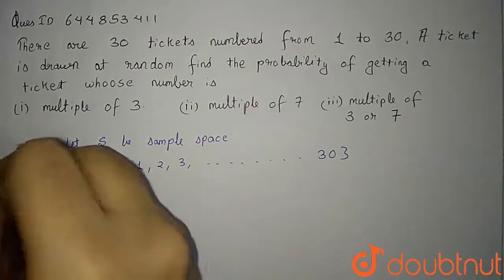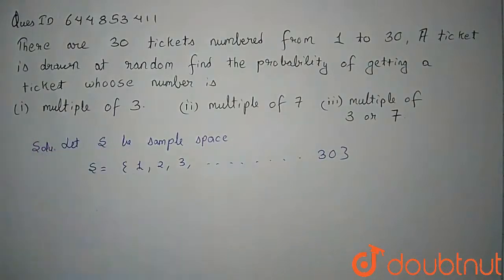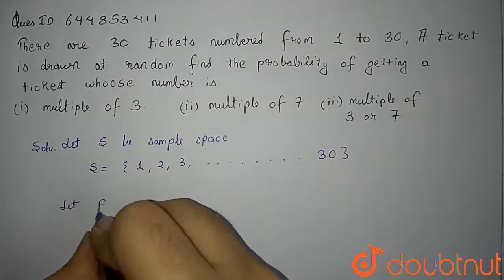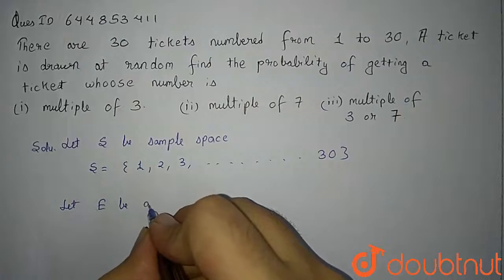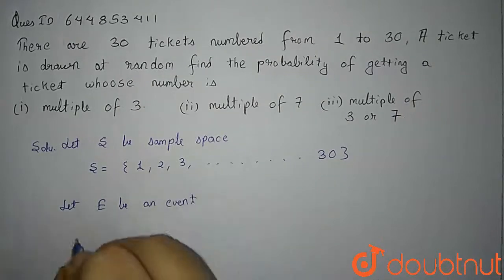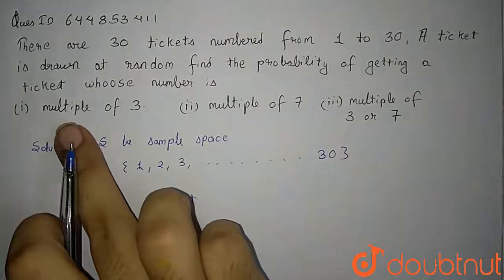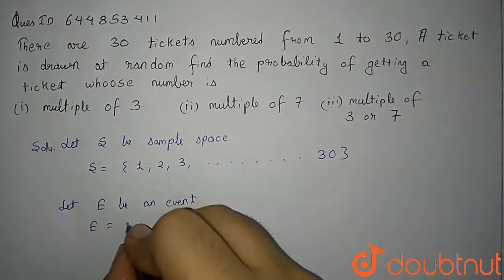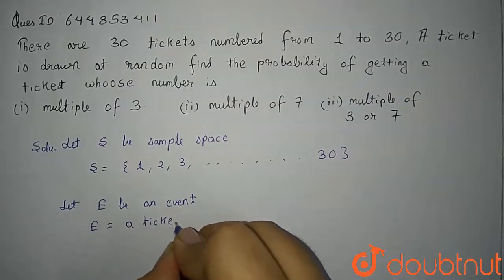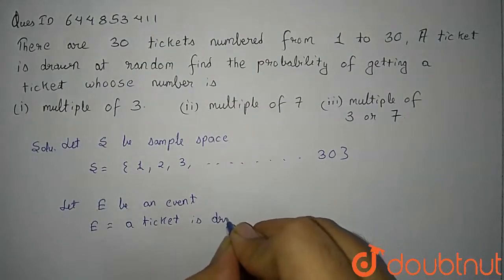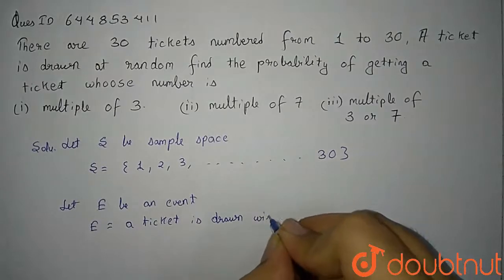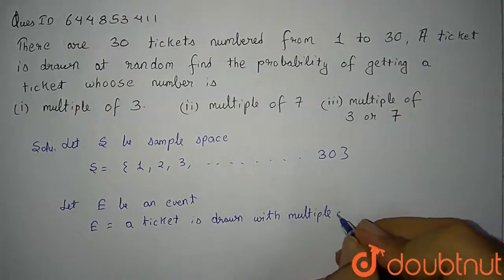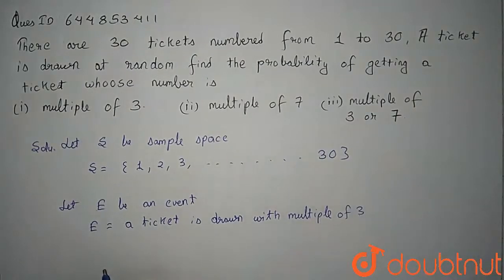We need to calculate the probability for getting a multiple of 3. For probability, we need to mention what is the event. So our event is: let E be an event such that a ticket is drawn with multiple of 3.